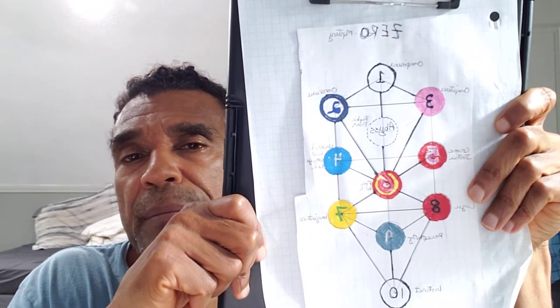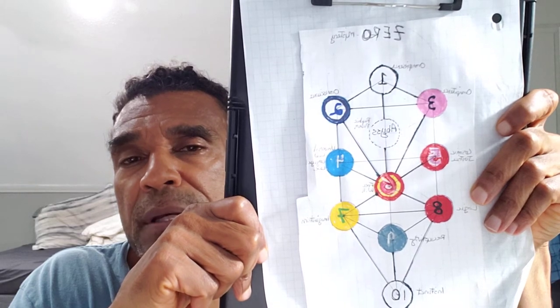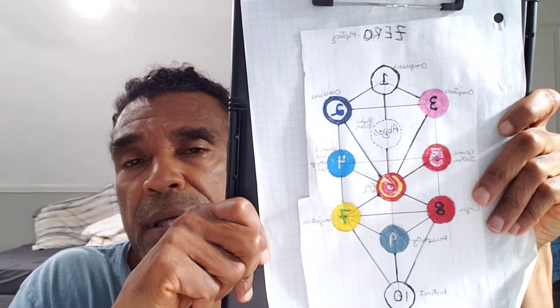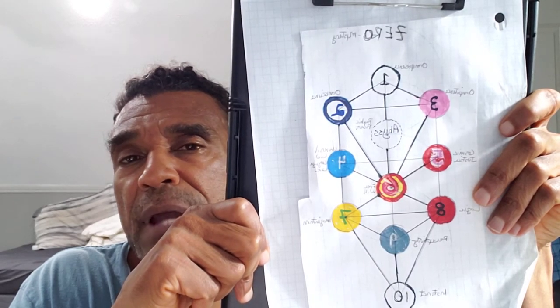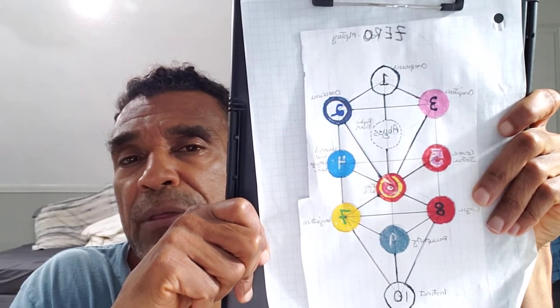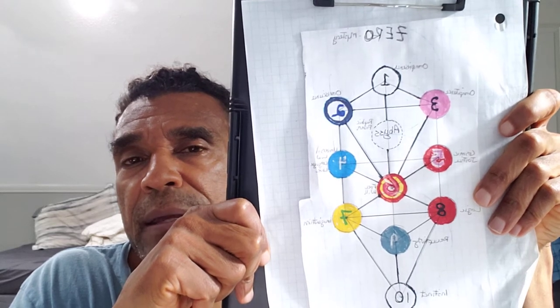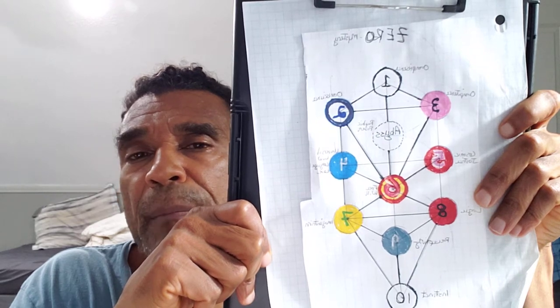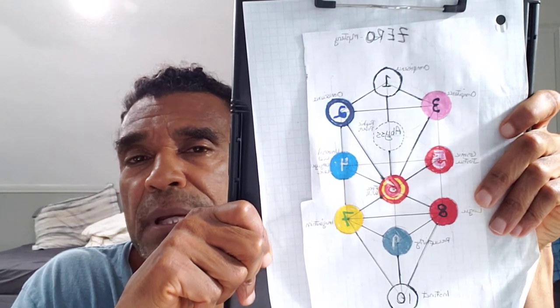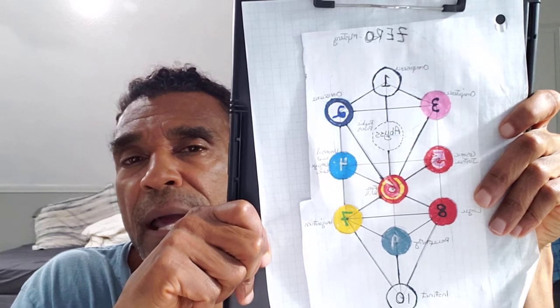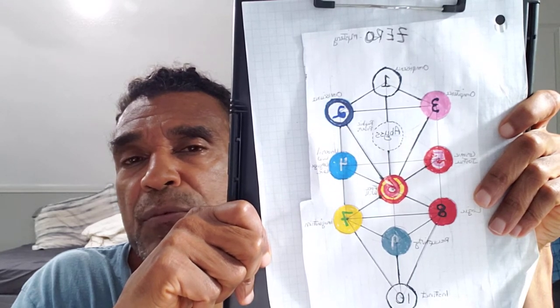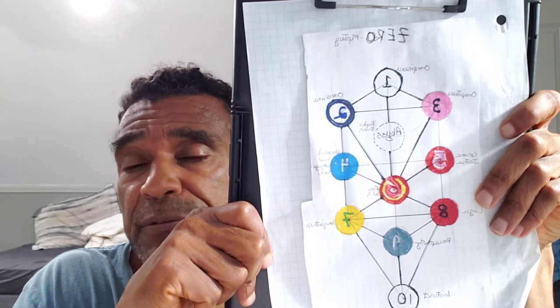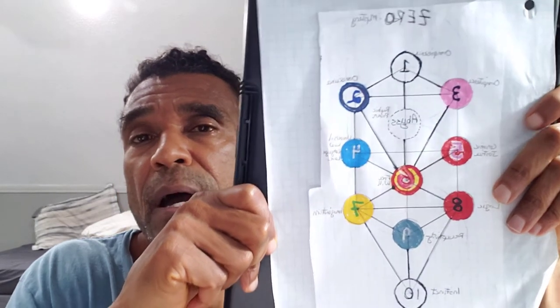It's really like an elaborate mnemonic device. One proponent of the tree called it a mystical filing cabinet. So basically you take in different kinds of information throughout the day, throughout your life, and all these different things that you take in have a place here on the tree.